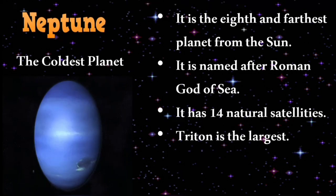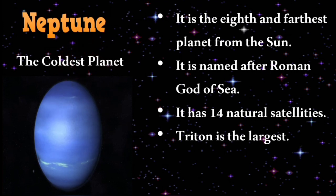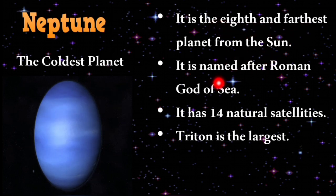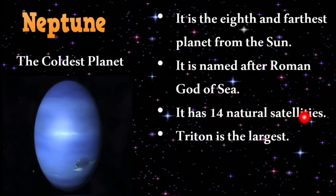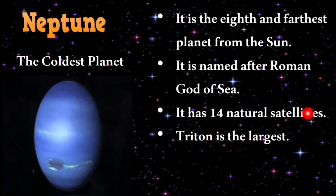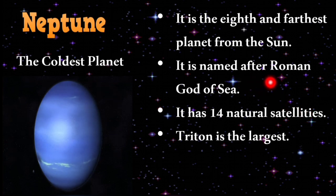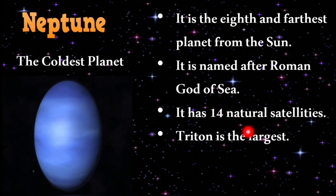Neptune is the coldest planet and the eighth and farthest planet from the sun. It is named after the Roman god of the sea. It has 14 natural satellites, of which Triton is the largest.